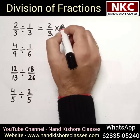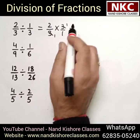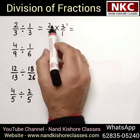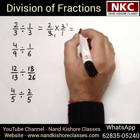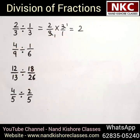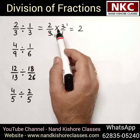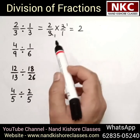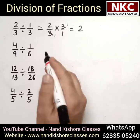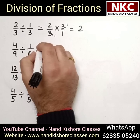This 3 and 3 will be cancelled out, and you will be left with 2 times 1, which is 2. So the answer of this division will be 2. If you are not clear about why we changed the sign of division to multiplication, please write in the comment box and we will create another video for clarification of that concept.